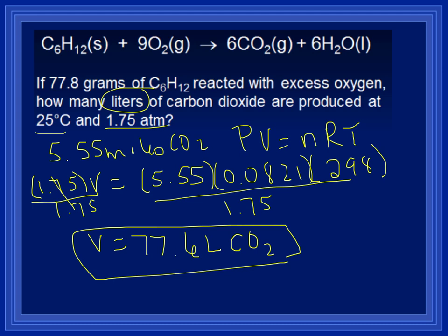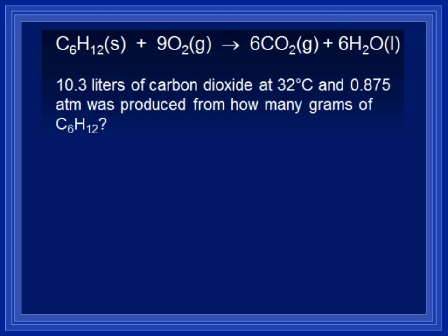Okay, now, so that's what you want to do if you start with grams and you're going to a volume. Different type of problem. We have 10.3 liters of carbon dioxide at 32 degrees and 0.875 ATM. That was produced from how many grams of C6H12. So this time we want to end up with grams at the end. So since we have liters and temperature and ATM to begin with, we're going to start with PV equals NRT in order to solve for moles of the gas. So then we can convert from moles of the gas to grams of the solid.